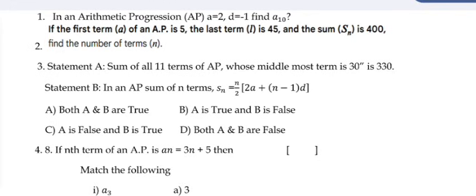The sum is 330. In an AP, sum of n terms is Sₙ is equal to n by 2 into 2a plus n minus 1 into d.